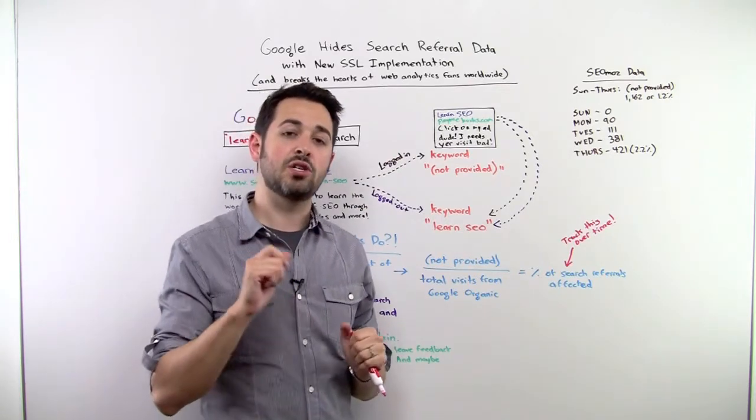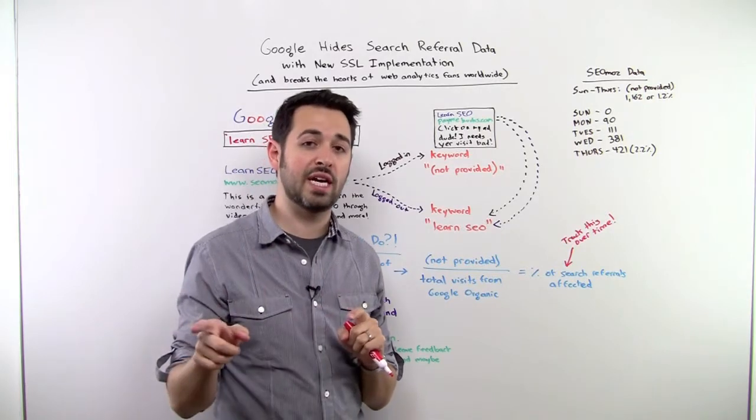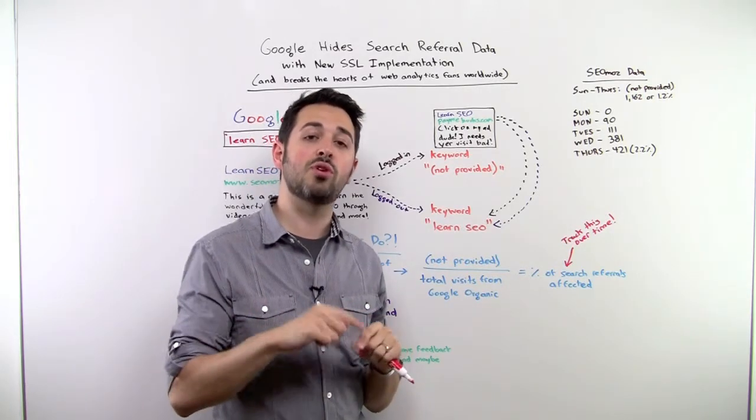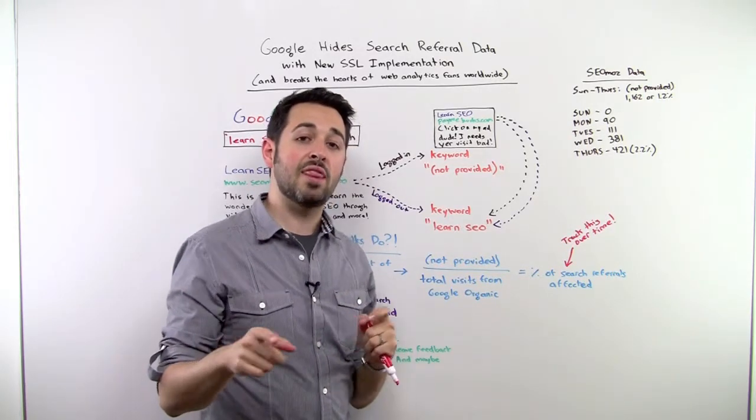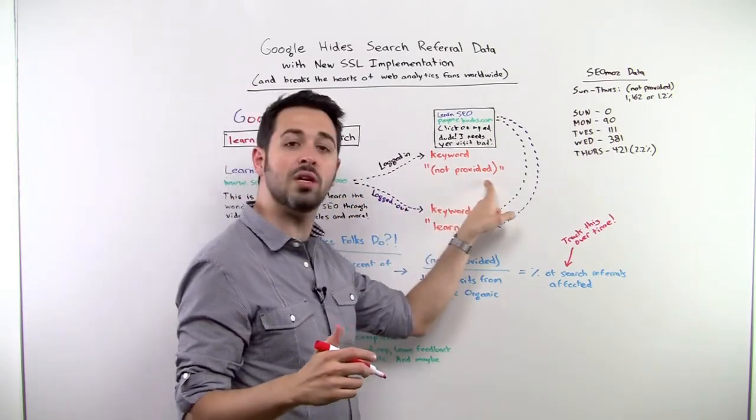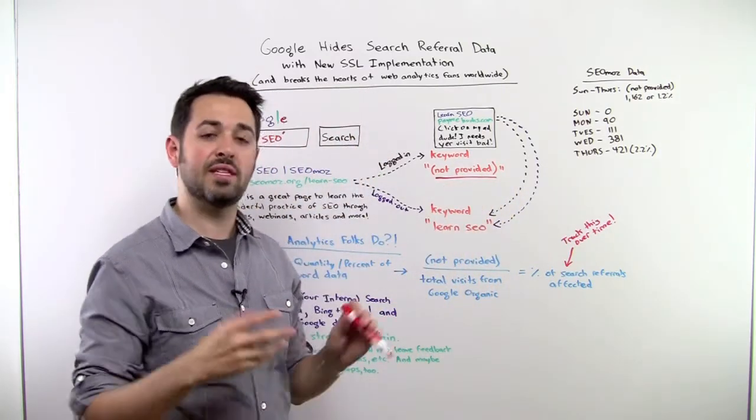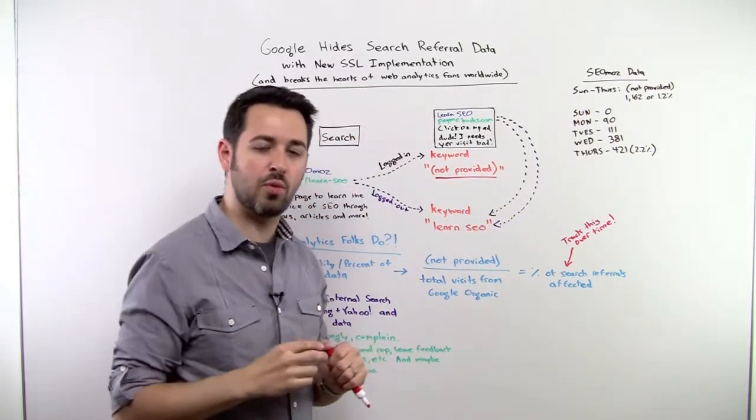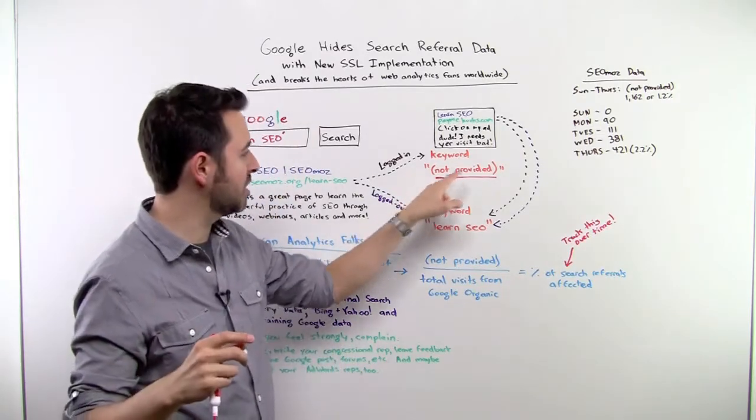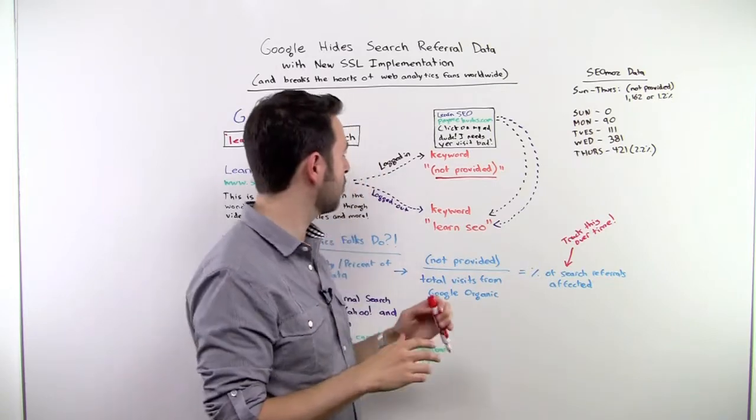This is changing. It is changing only for folks who are logged in. If you are searching from Google and you are logged in, this will be changing so that the logged in behavior, the keyword that referred the visit will be shown as not provided. And this will show in your web analytics. That's what Google will say. They'll use these parentheses. That's how you can see it in the Google Analytics dashboard currently.